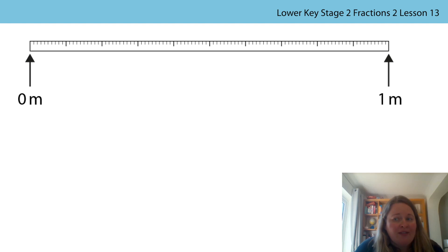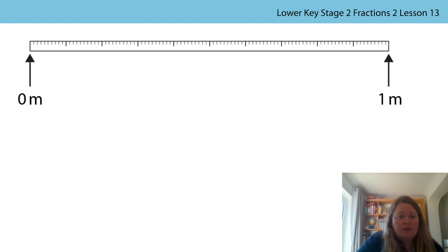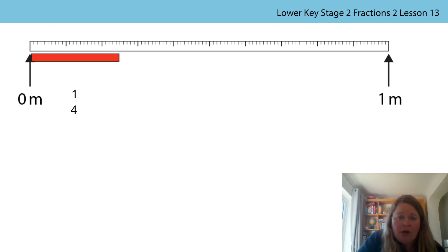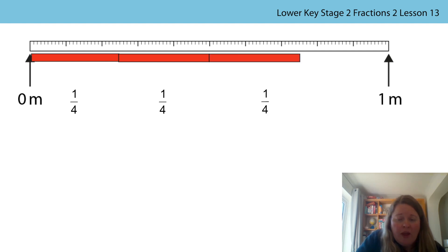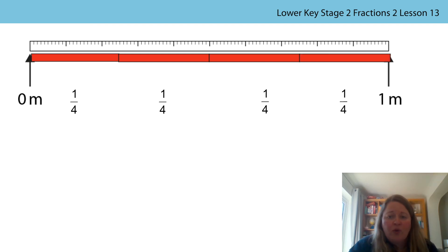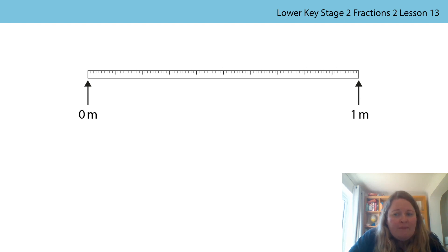Let's use our metre stick to look at quarters. One quarter of a metre means the metre stick has been divided into four equal parts. There's one quarter and one equal part, there's our second quarter and second equal part, here is our third quarter and third equal part, and here is our fourth equal part and our fourth one quarter. And we know that half a metre means our metre stick has been divided into two equal parts.